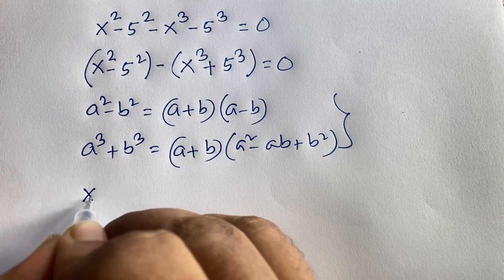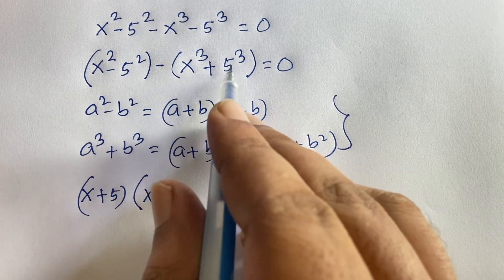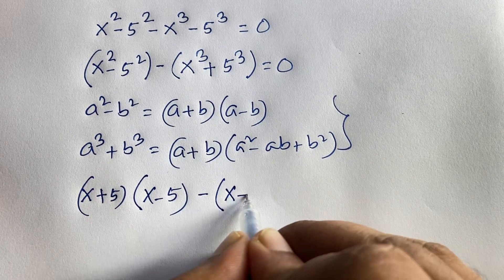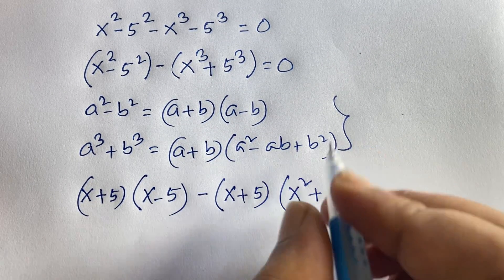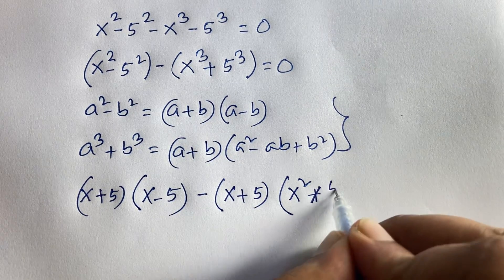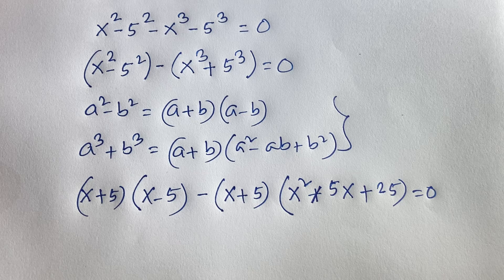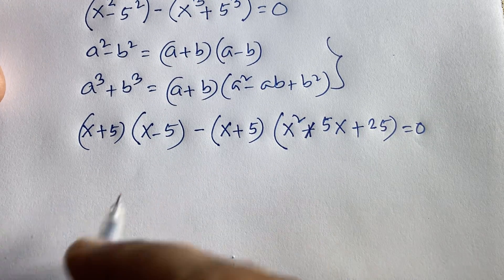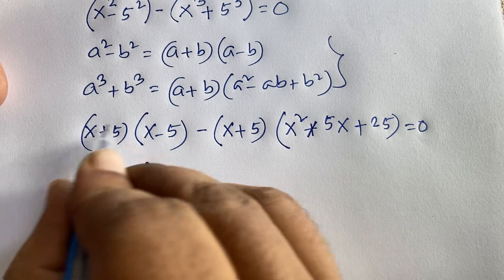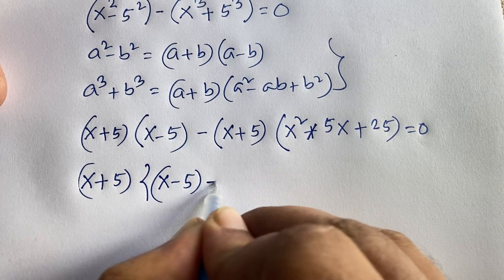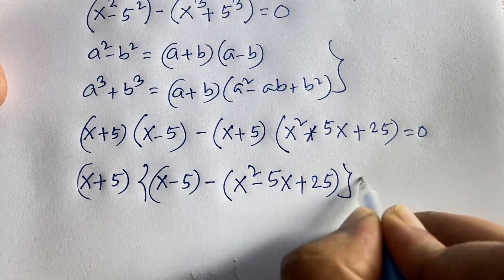Applying these: x squared minus 5 squared becomes (x plus 5)(x minus 5). And x cubed plus 5 cubed, where a is x and b is 5, becomes (x plus 5)(x squared minus 5x plus 25). So the full expression is (x plus 5)(x minus 5) minus (x plus 5)(x squared minus 5x plus 25) is equal to 0.